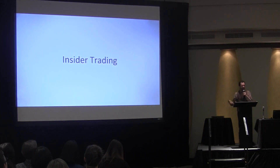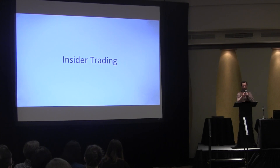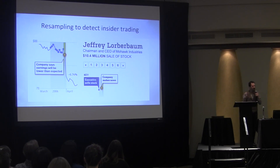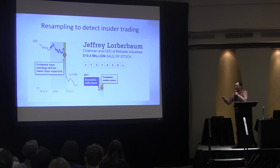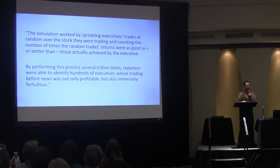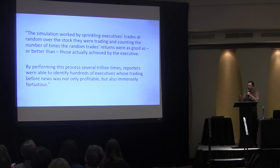There's more. Is there anything that resampling cannot do? In this case, the Wall Street Journal wanted to know — was there insider trading by executives? Now, I don't know anything about inside information, but I do know something about luck. So here's what we do. We take all of the trades they did over the last year, we randomly scramble them through time, we ask who got lucky — and not just lucky, astronomically lucky. A few trillion re-samples, and the answer pops right out.